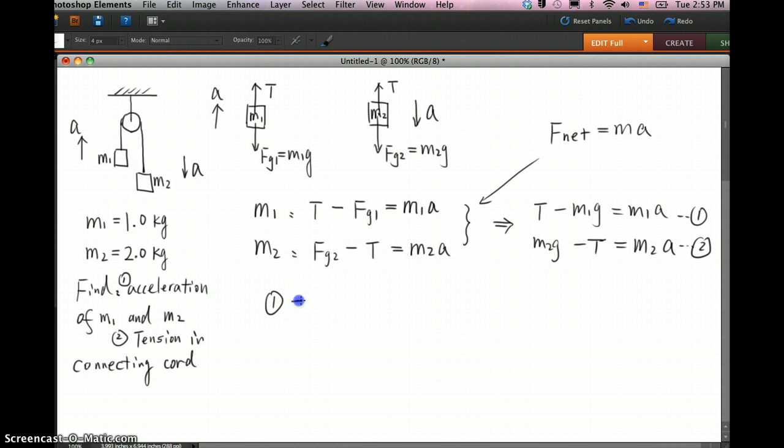I would like to always do 1 plus 2 in this kind of case. So then you can see the left side add to the left side. You cancel the T, you get M2g minus M1g. And then you add the right side to the right side and factor the A out. You get M1 plus M2 times A.